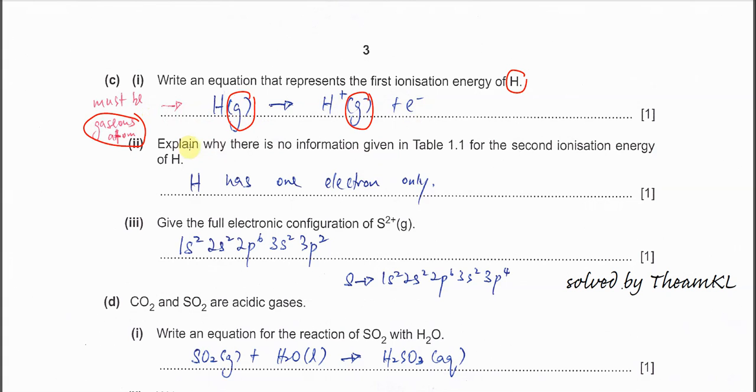Part C(ii): Explain why there's no information for the second ionization energy of hydrogen. Because hydrogen is 1s¹ - one electron only. When removed, there are no electrons left, so there's no second ionization energy value.